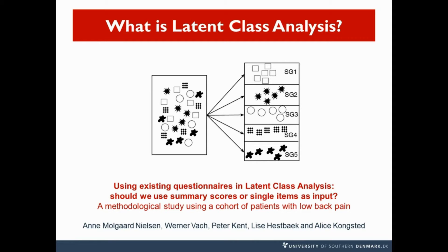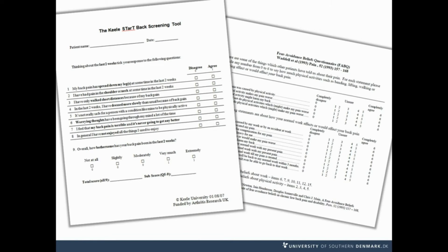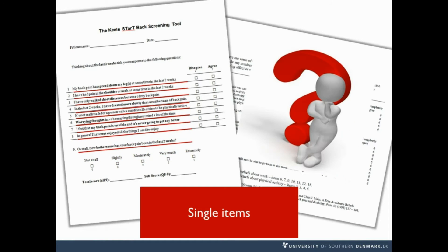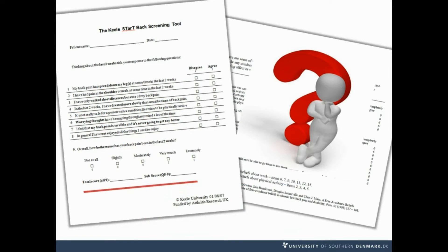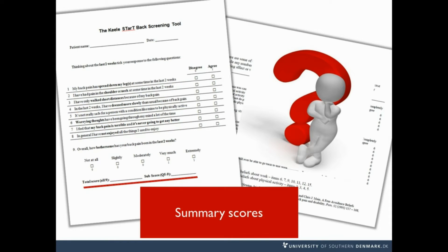Using the example of low back pain, our group wanted to explore the optimal strategy for LCA when data collection consists of existing questionnaires with different single items that result in predefined summary scores. Is it preferable to use each single item of the questionnaires, or is it better to use the summary scores?